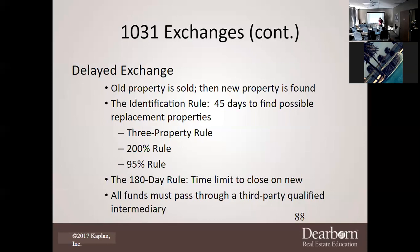Say you close in January — you have 45 days to identify possible replacement properties. If you don't close on those identified properties within the 180-day window, you may get taxed. That's why it's important to identify as many properties as possible. If a client says they'll just pick one property, that's not how it works — there need to be multiple. Your tax advisor should explain all of this.